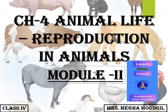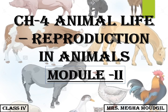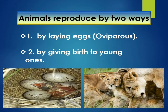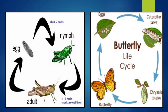Good morning! Welcome to your EVS class. Today we will be doing module 2 of chapter 4: animal life — reproduction in animals. In module 1, we studied that all animals reproduce by two ways: either by laying eggs or by giving birth to young ones. We also studied about the life cycle of a bird, grasshopper, and a butterfly.